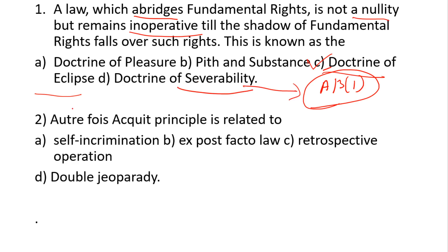Next question: the Autrefois Acquit principle is related to which of the following — protection against self-incrimination, ex post facto law, retrospective operation, or double jeopardy? The correct option is D — double jeopardy, which is under Article 20, clause 2. Double jeopardy means no person shall be prosecuted and punished for the same offense more than once.